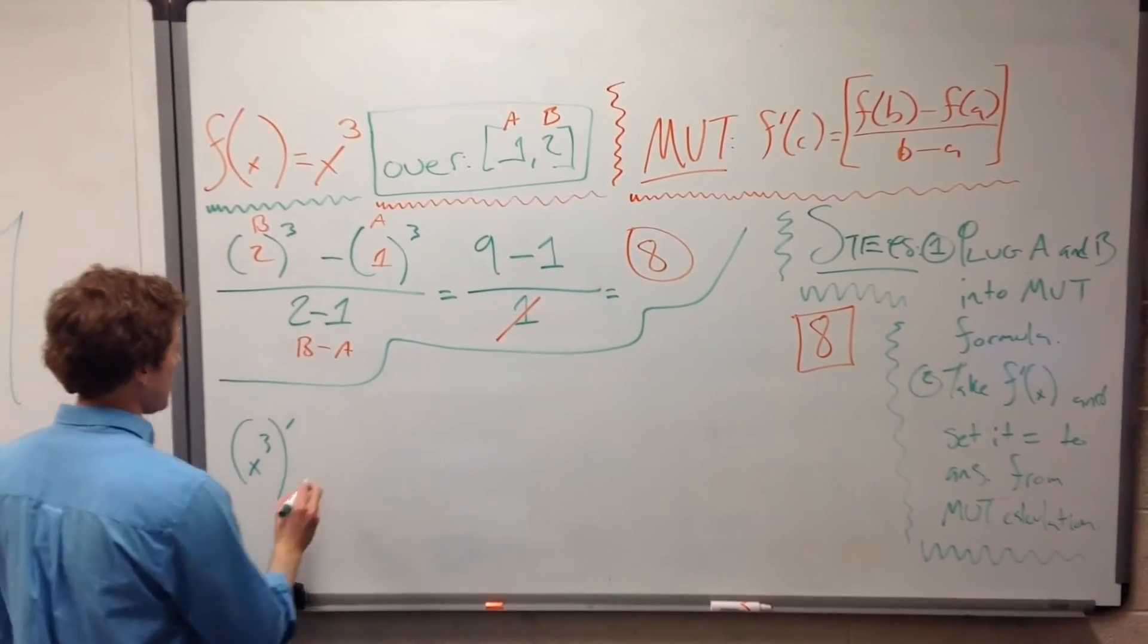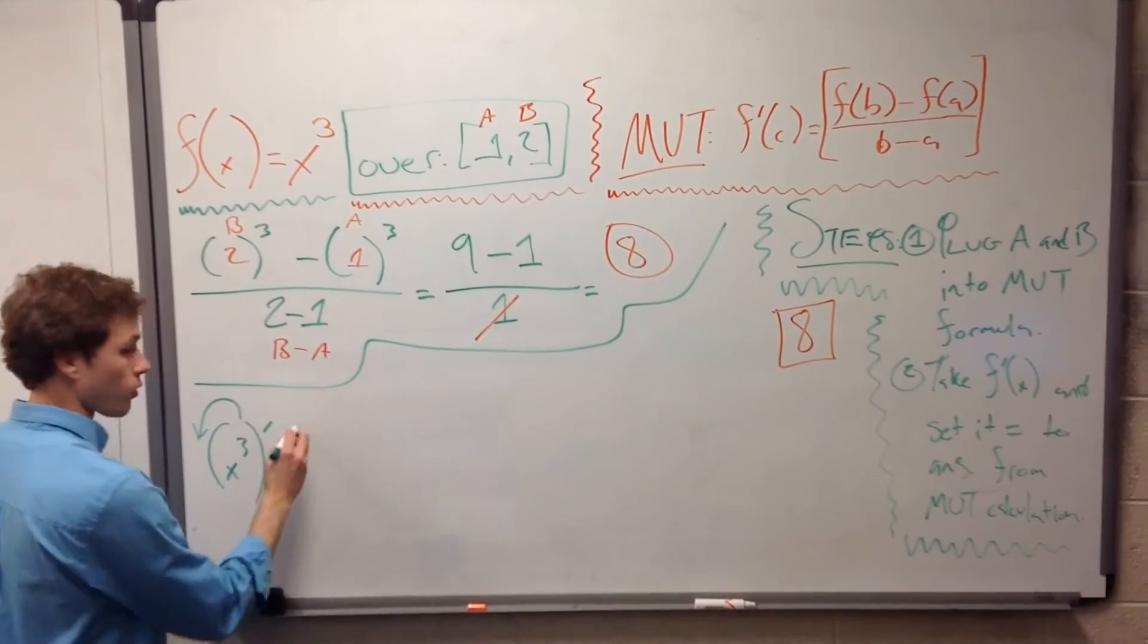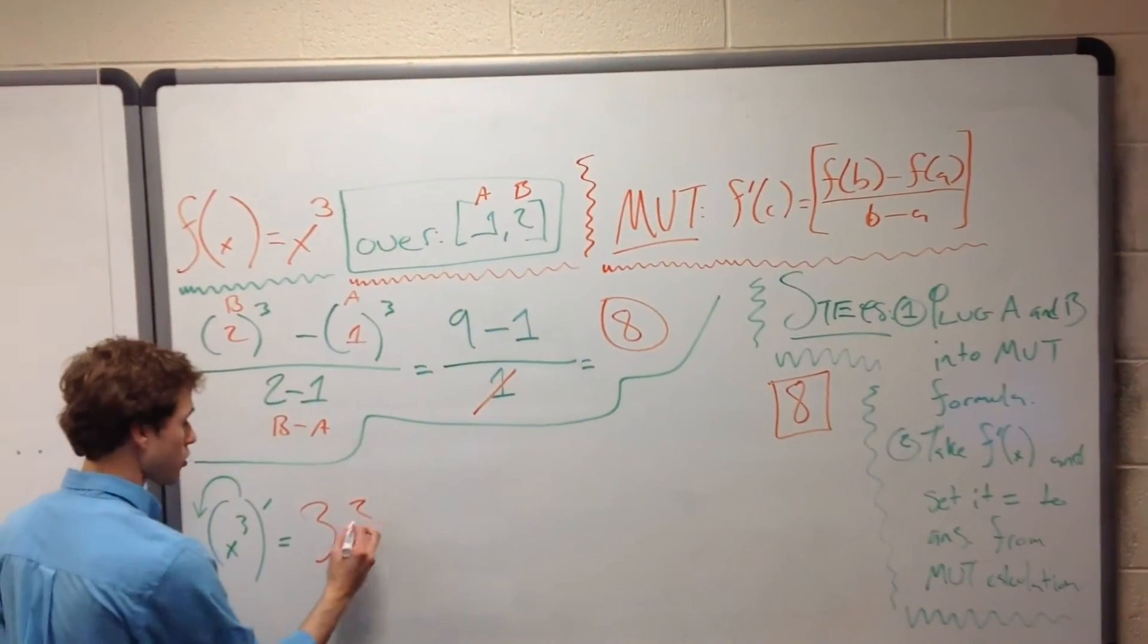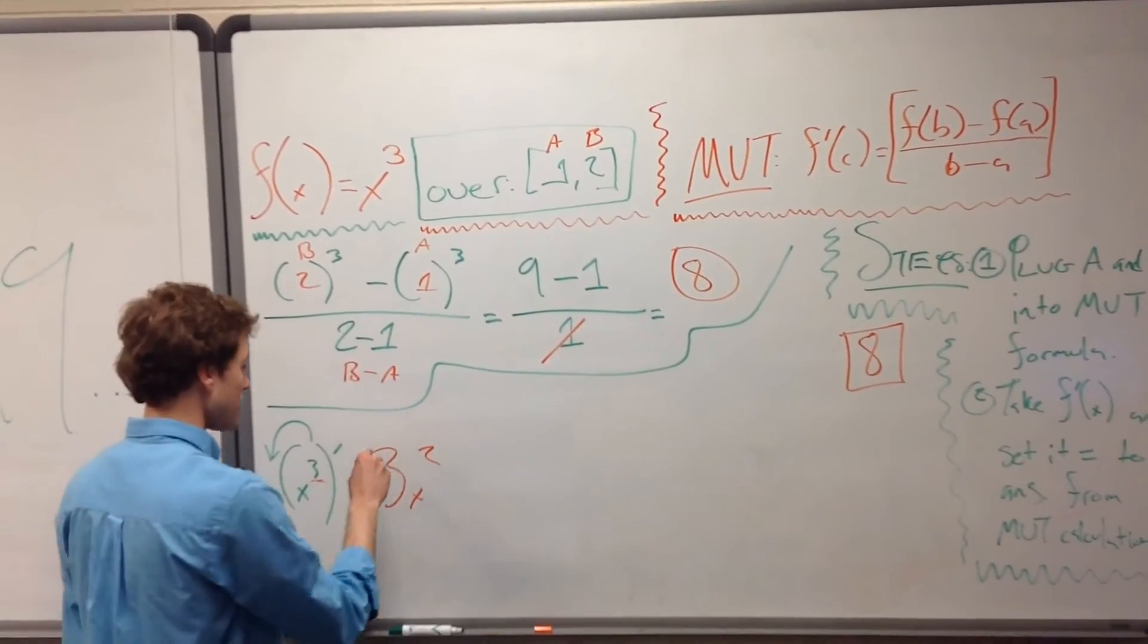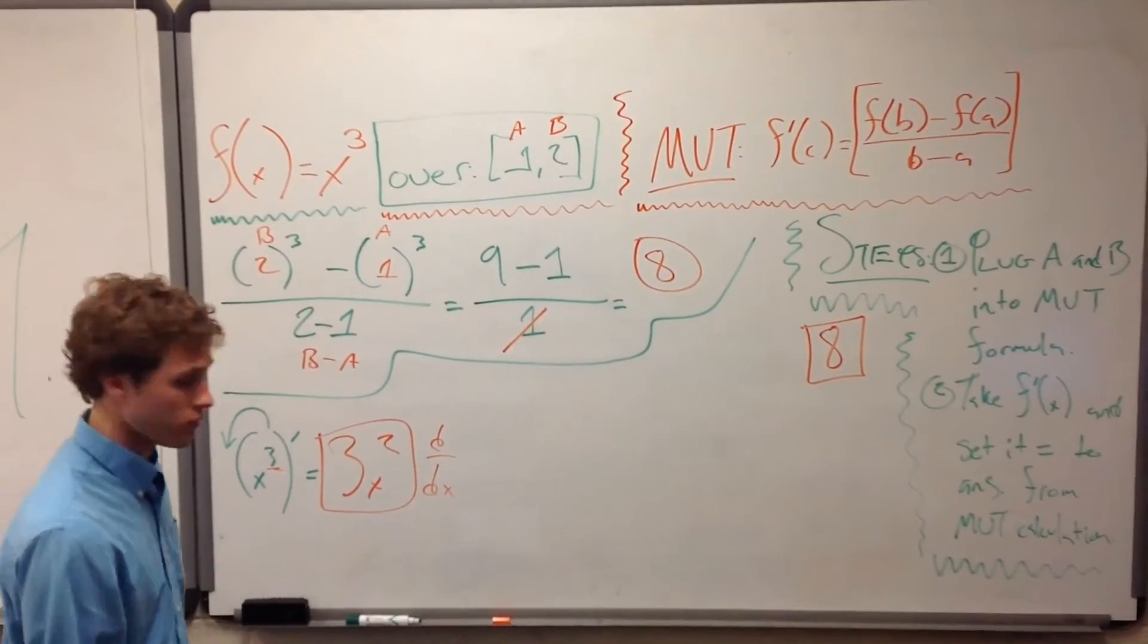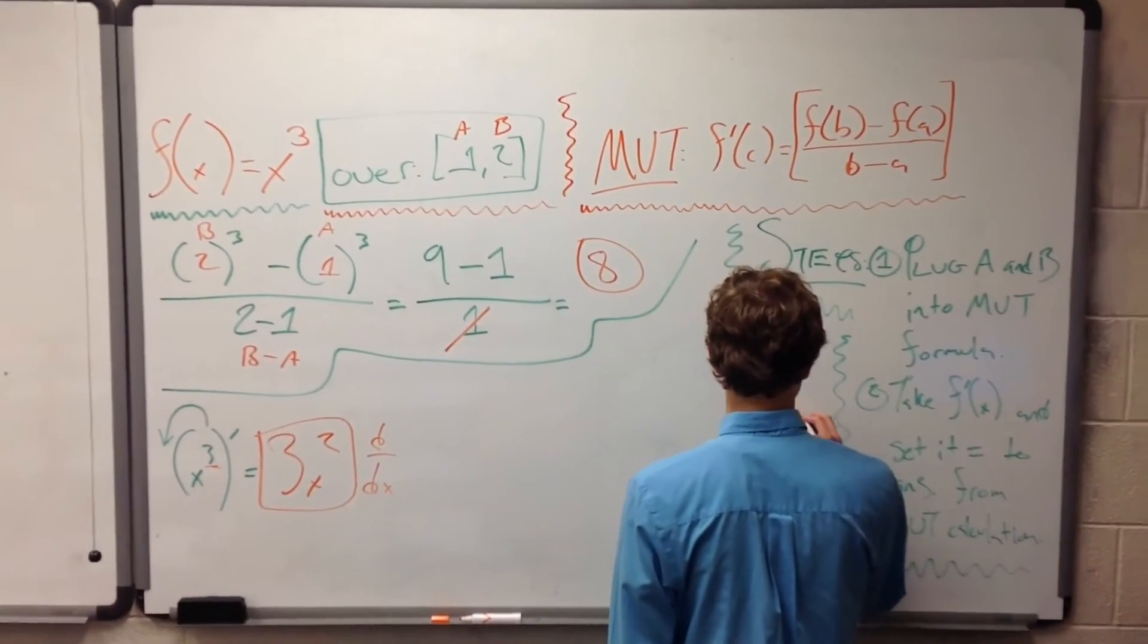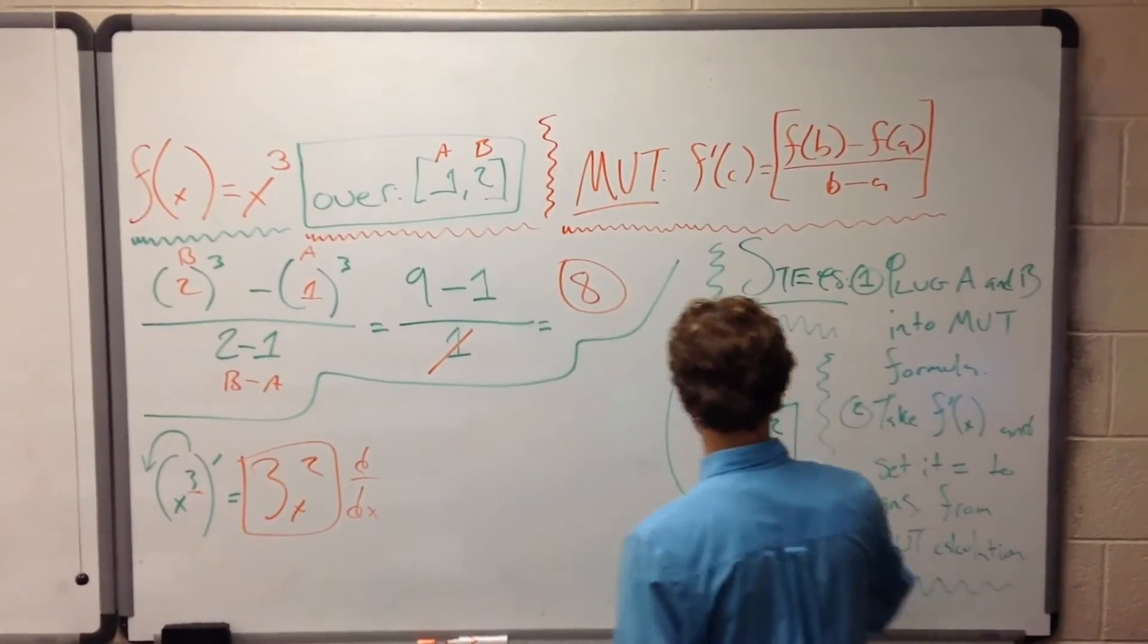So let's take prime of this. x³ prime is, bring down the 3, and then lower this power. So we have x³ prime = 3x² because we're taking this power and we're subtracting one from it after we've pulled it out. So this right here is our d/dx for the original function. So this is our second useful number. So we have 3x².